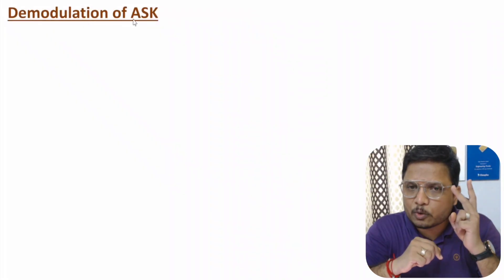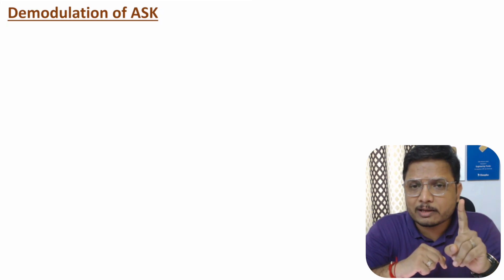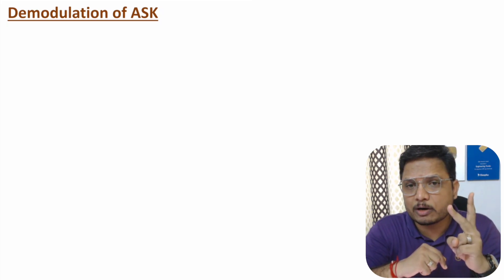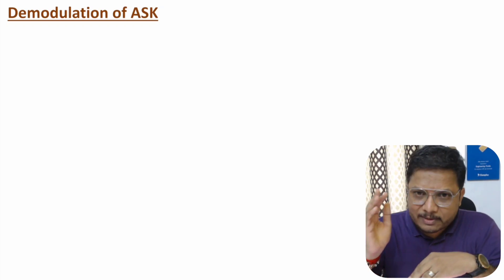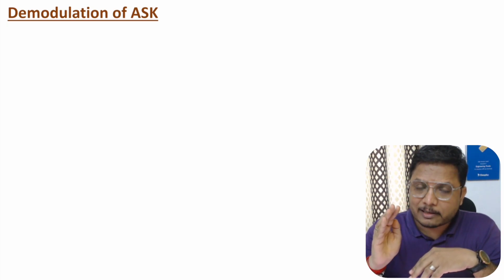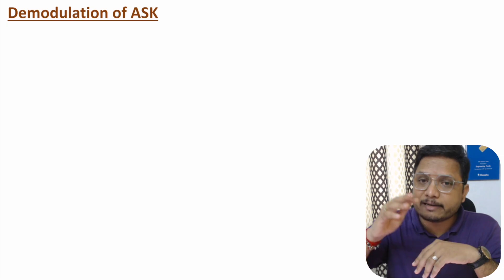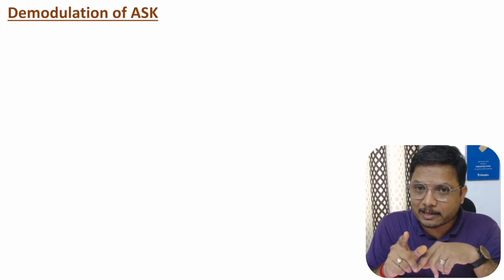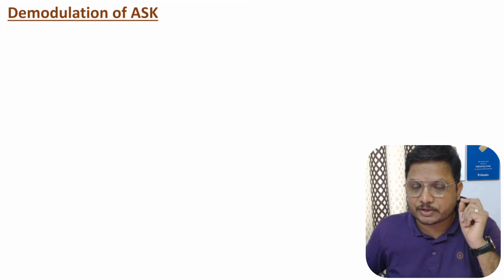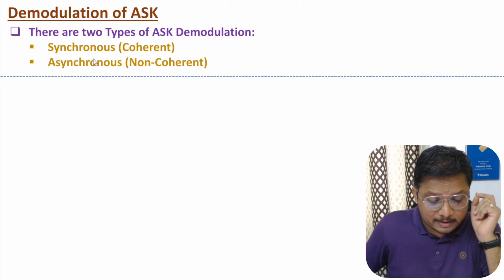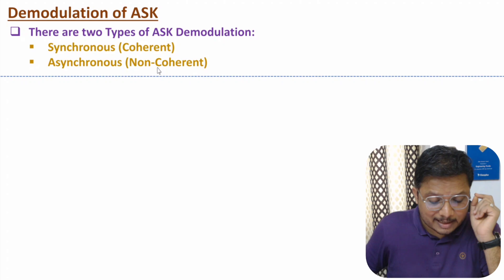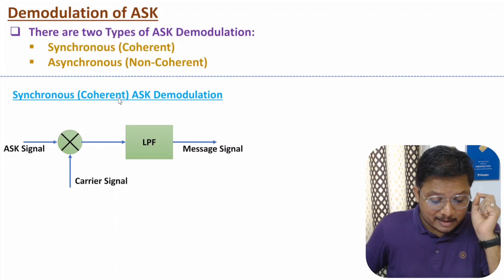Demodulation of ASK can be done in two ways: synchronous (coherent) demodulation and asynchronous (non-coherent) demodulation. In synchronous demodulation, the receiver has the carrier signal available. In asynchronous demodulation, the receiver does not have the carrier signal.